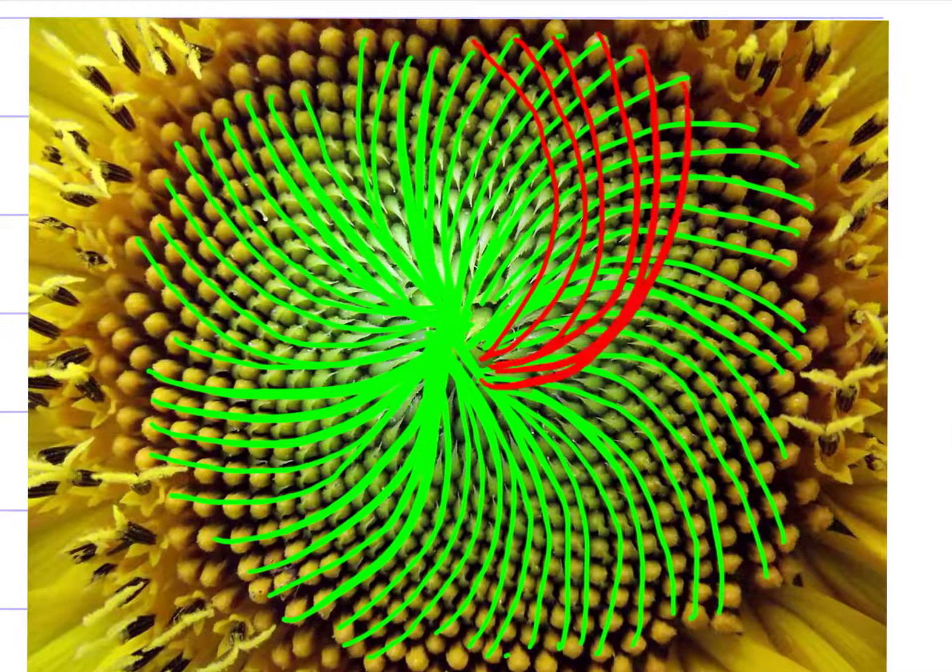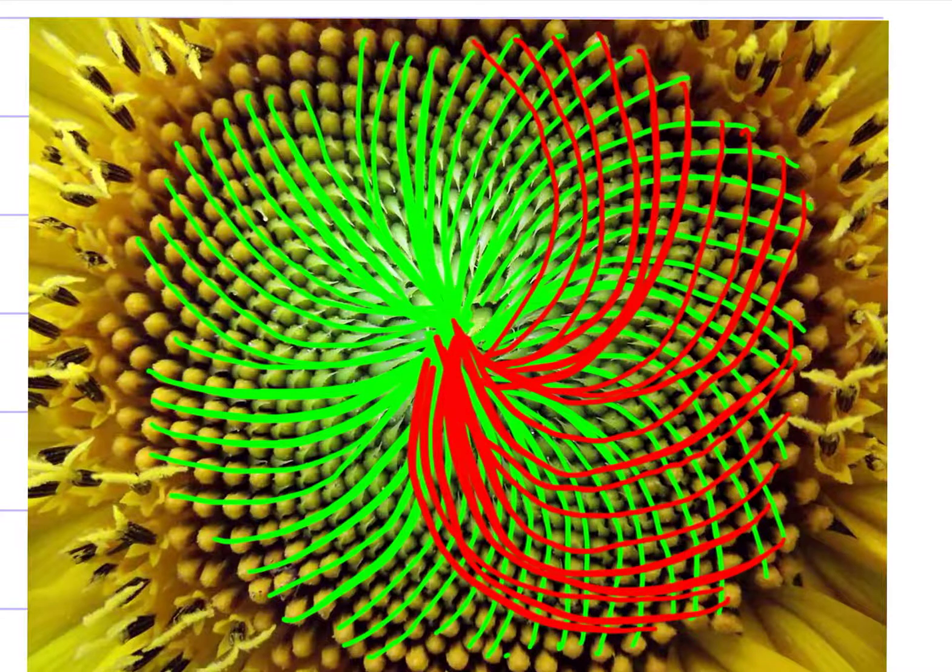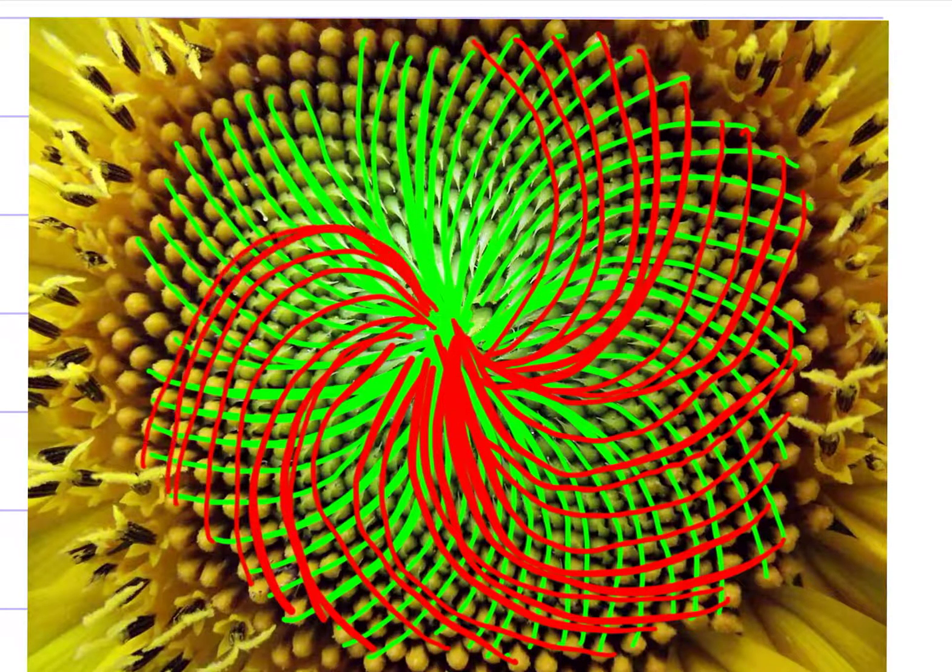If you count the number of spirals twirling in opposite directions, the number of spirals are actually almost always two consecutive Fibonacci numbers, which I find very interesting.